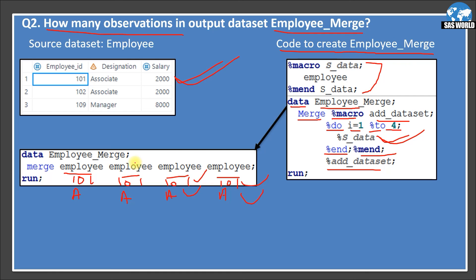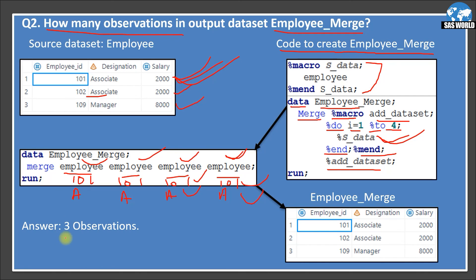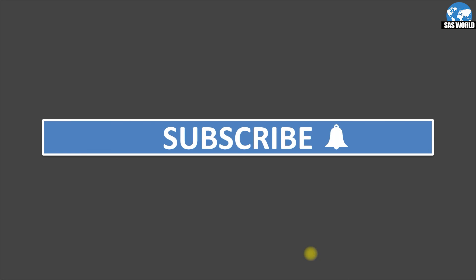Since we haven't specified any BY variable, this is positional merge. If we used BY ID, what would happen? When you use a BY variable, your merge changes to a match merge, because you've specified a matching variable. Here, since all values are the same, observations overwrite each other — and ultimately, the total number of observations would be the same as the source. The answer is three observations in the output data set. This is a tricky question — I hope I was able to explain this.